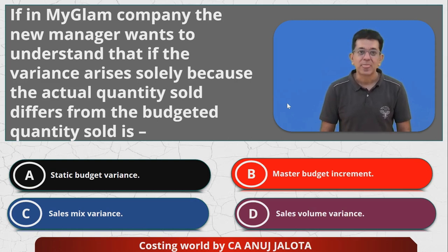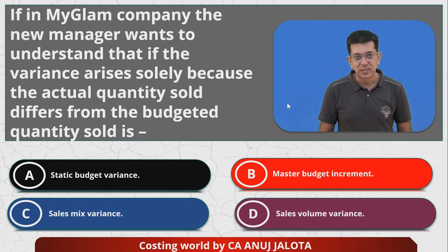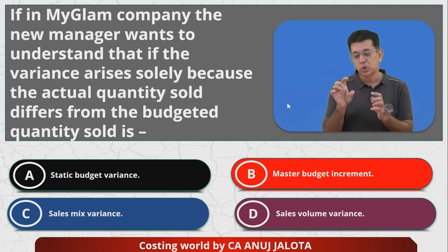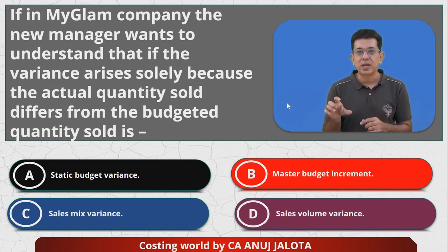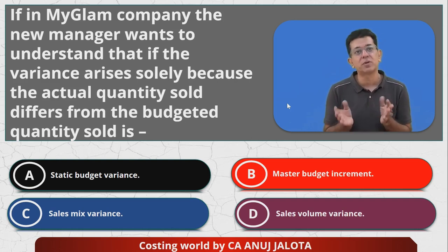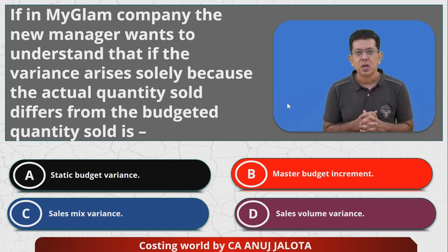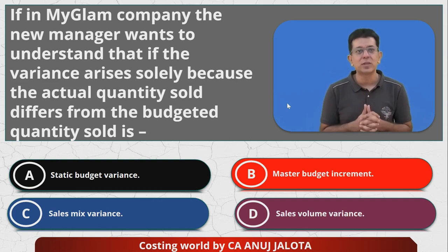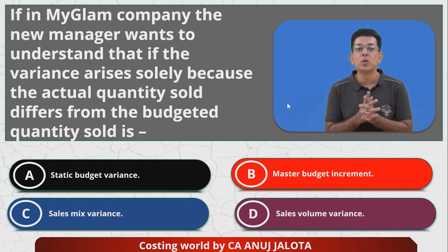Now, options A and B do not make any sense — there is no variance like that. For option C, sales mix variance: how do you compute that? It looks at what should have been the breakup of actual quantity sold versus what was the breakup. But the question is not talking about the ratio or the mix part, so C is not the answer.